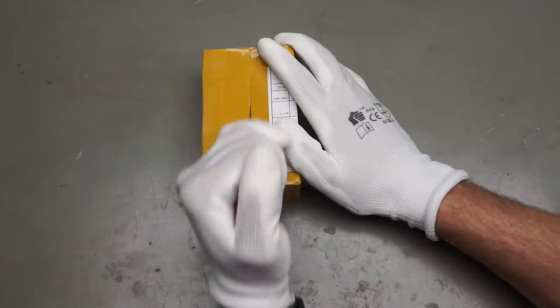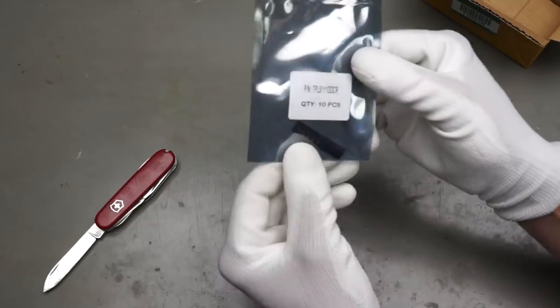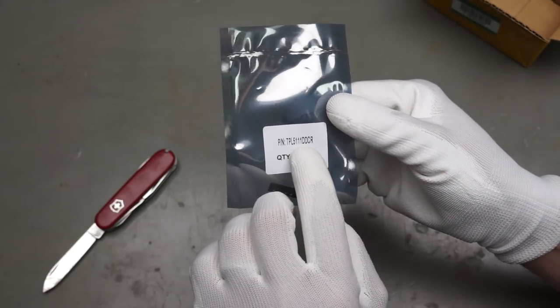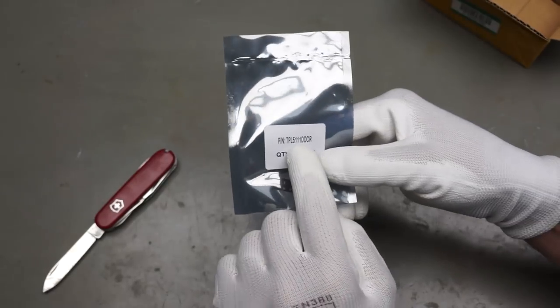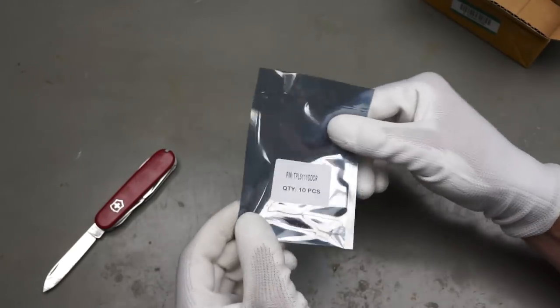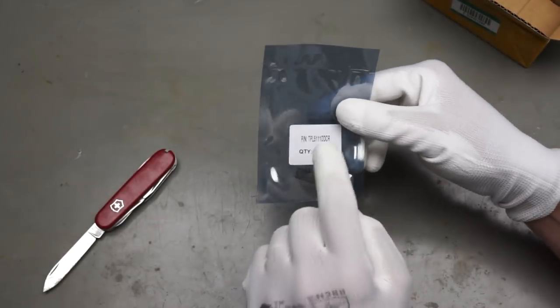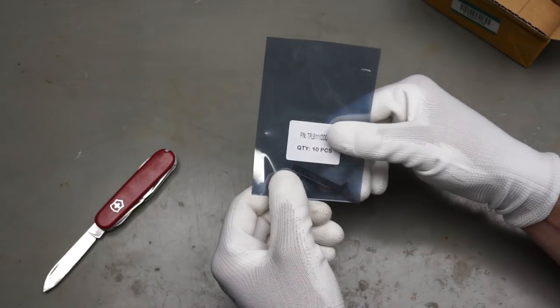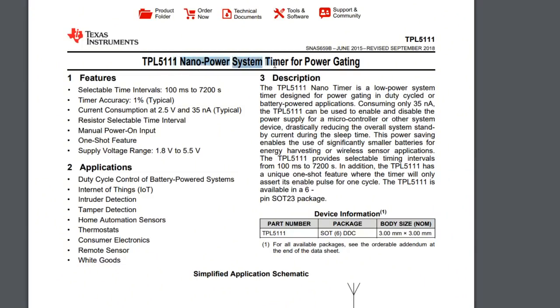Next one. These are TPL5111. I already got the 5110 and I will do a video about the two in the future about low power designs with microcontrollers. These are the ones which are used by Kevin Darrah. These are nano power system timers which means that we can switch off our devices from 100 milliseconds to 2 hours and during this time they nearly use no current, only 35 nanoamperes. Cool device as we saw in the video about the Trinket board.